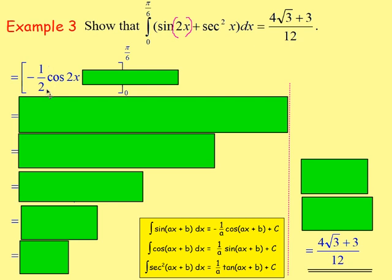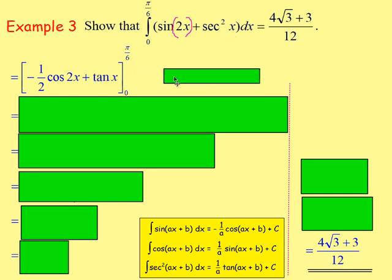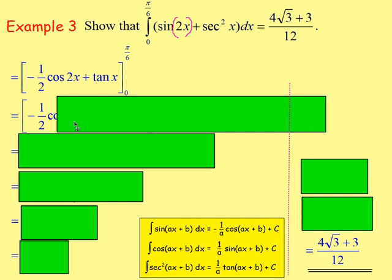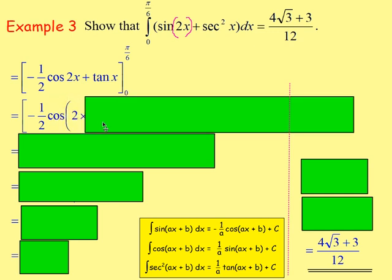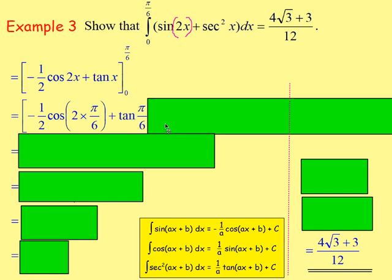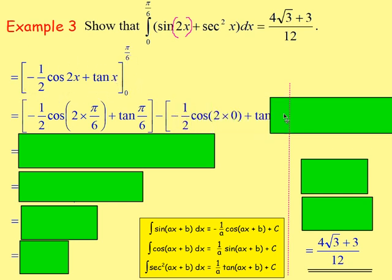Divide by two means multiply by a half. After that, adding sec²(x) — integrating sec² gives tan. So you'd have tan(x). From there, sub in the values π/6 and 0. So you've got negative one half times cos(2 × π/6) plus tan(π/6), then subtracting: negative one half times cos(2 × 0) plus tan(0).